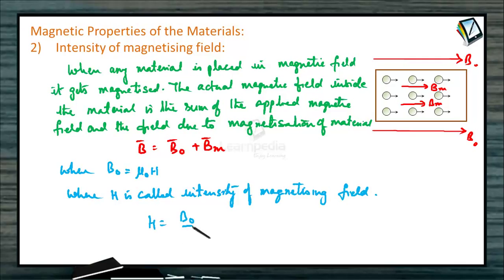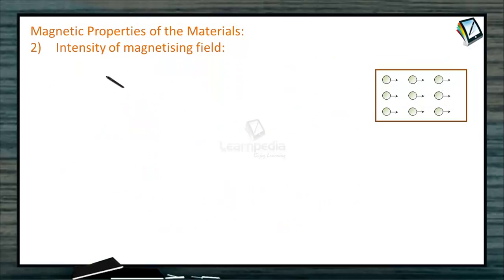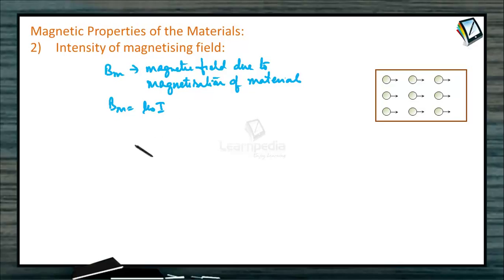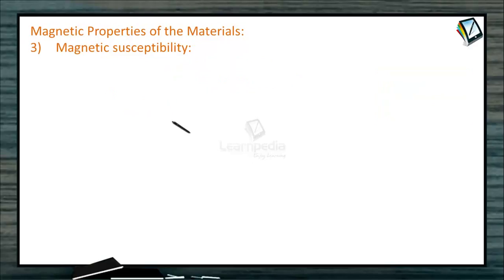H equals B₀ divided by μ₀, and since B₀ = μ₀NI divided by μ₀, H equals N times I. B_M is the magnetic field due to the magnetization of the material and is written as μ₀ times I. So the intensity of the magnetizing field H is defined, and B_M equals μ₀I.